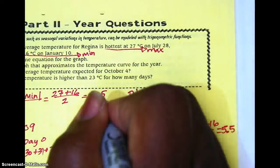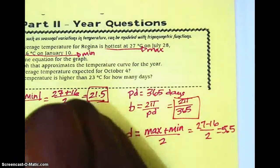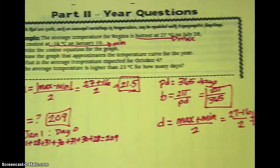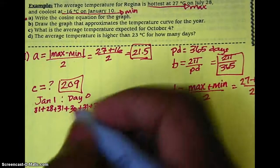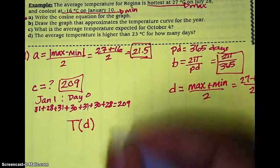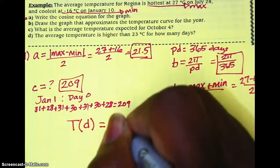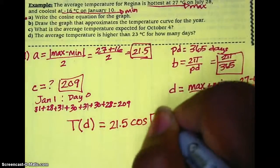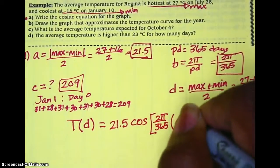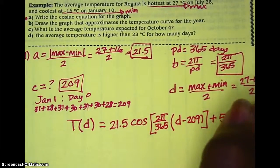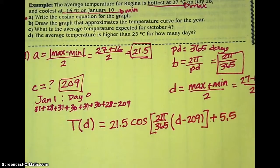So we have all the numbers we need: A, B, C, and D. We'll plug those into our standard form of the cosine equation, which looks like T(d) — the temperature after a certain number of days — equals the amplitude 21.5, multiplied by the cosine of 2π/365 times (d minus 209), which is our phase shift, added to 5.5, the value of D, our vertical displacement or the location of our midline. That completes part A.